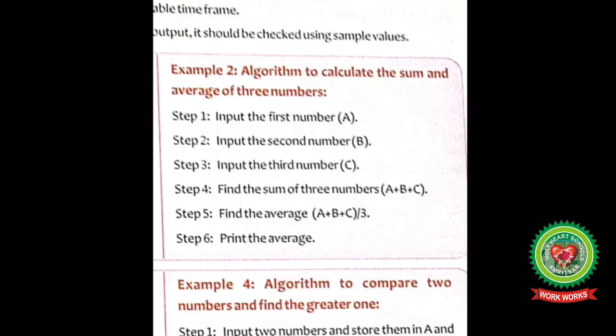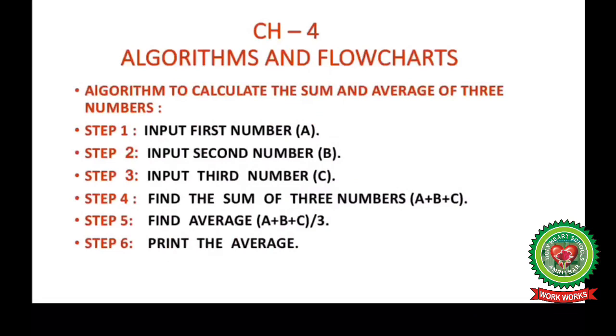Now look at your book on page number 45, example 2: algorithm to calculate the sum and average of three numbers. We will discuss this algorithm. In this algorithm, we have six steps to solve the problem.